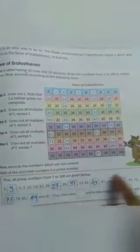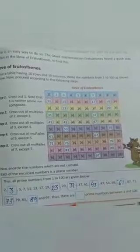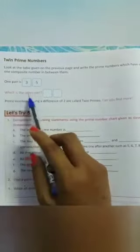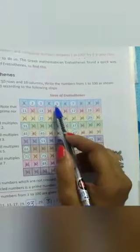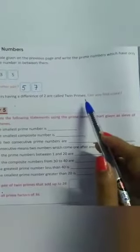Ab aap is sare numbers count karke wo number yahan likh honge, ki 1 to 100 ki beech mein kitne prime numbers hote hain. Then come to next page. Twin prime numbers, we have already discussed ki wo pair of prime number jinka difference kya hoga, 2. So ek pair to aapko given hai, 3 and 5, which is the other pair? Abhi aap pichle jo table humne kiya, usmein se find out kar sakte ho. Difference kya aana chahiye, 2. Ab wo do numbers aur kaun se honge jinka difference 2 hoga? So 5 and 7, hum yeh le sakte hain, 7 minus 5 is 2. So we can take 5 and 7, this is the other pair. Prime numbers having a difference of 2 are called twin prime numbers.